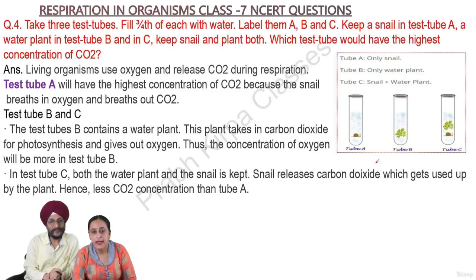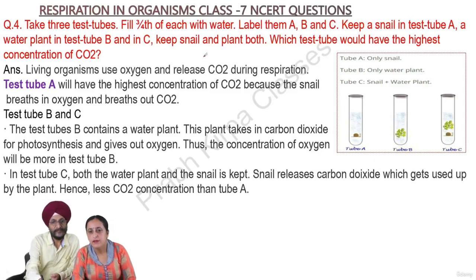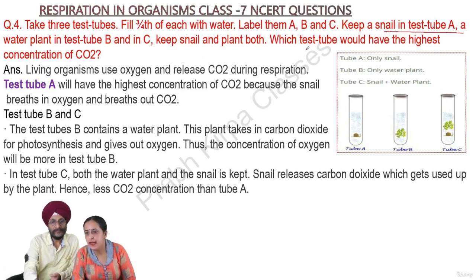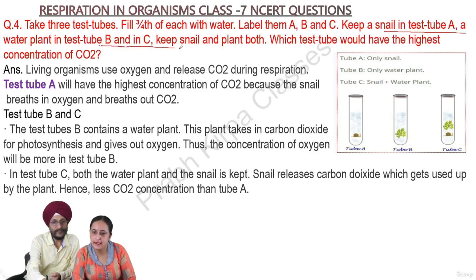Question 4: Take 3 test tubes. Fill three-fourths of each with water. Label them A, B, and C. Keep a snail in test tube A, a water plant in test tube B, and in test tube C keep both the snail and the plant.